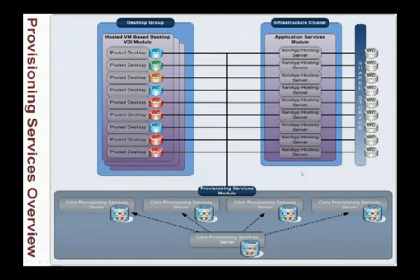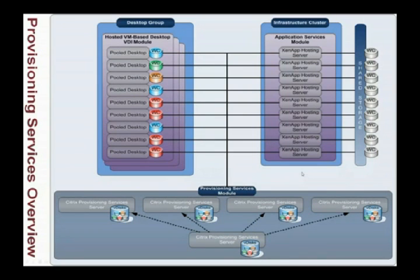The next part is the desktop images. If we take a look at how we deliver these desktop images to our environments, we look at the provisioning services overview of this environment and you can see the architecture drawing for this. We're delivering images not only to the desktops, but we're also delivering the images to the XenApp servers.